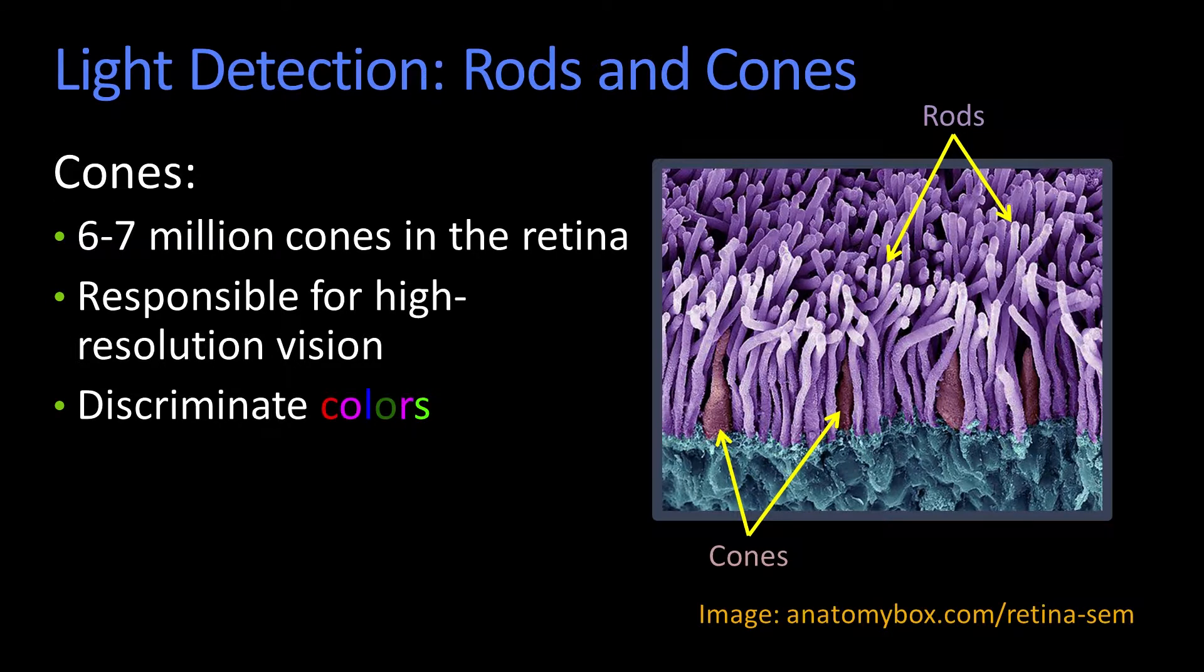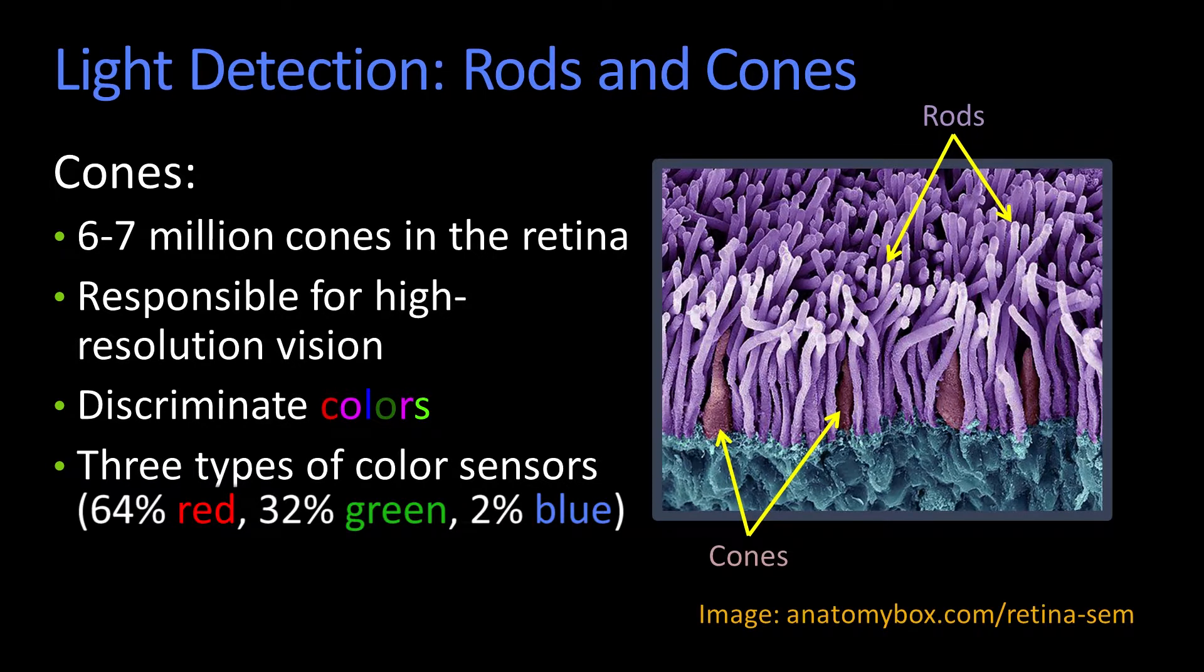And most importantly for today's conversation, it's your cones that discriminate color. That is, they're sensitive to different wavelengths. And your visual system uses the outputs of the cones processed through a variety of channels to see color. In particular, there are three types of cones that are called red, green, and blue.